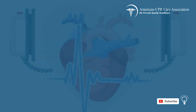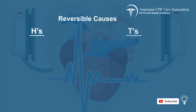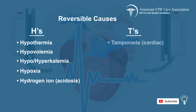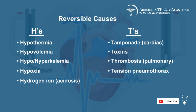One last thing to keep in mind are the reversible causes, or the H's and T's, which include the following: hypothermia, hypovolemia, hypo or hyperkalemia, hypoxia, hydrogen ion or acidosis, cardiac tamponade, toxins, pulmonary thrombosis, tension pneumothorax, and coronary thrombosis.